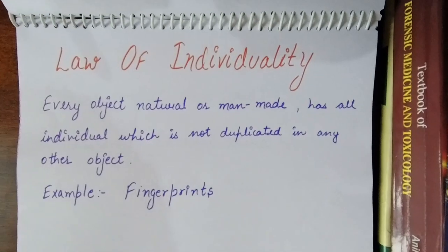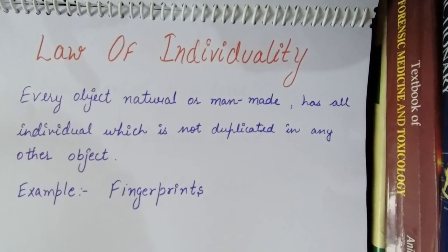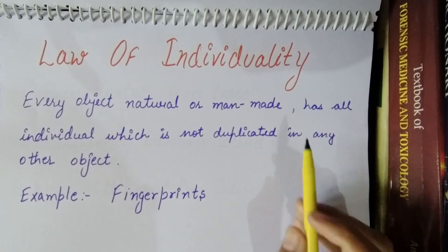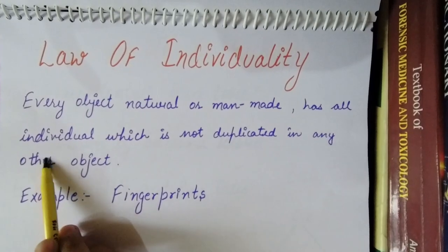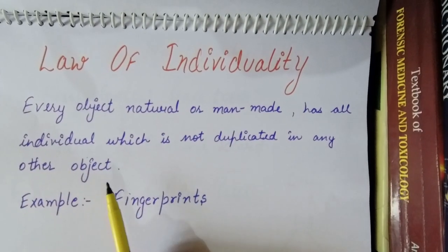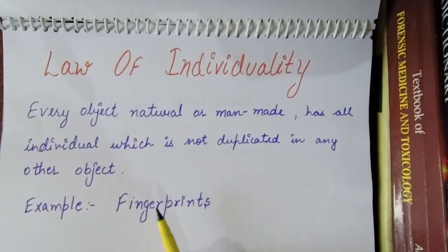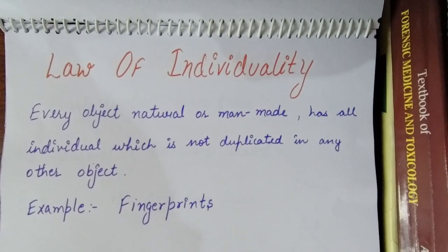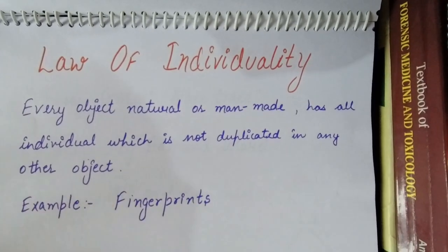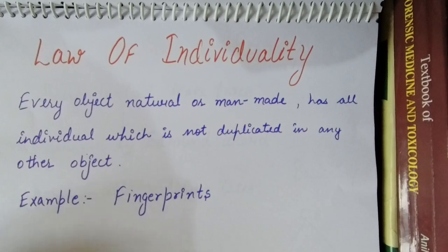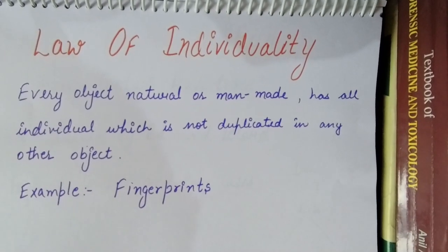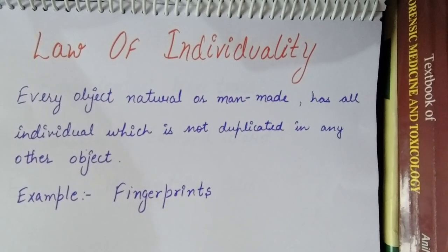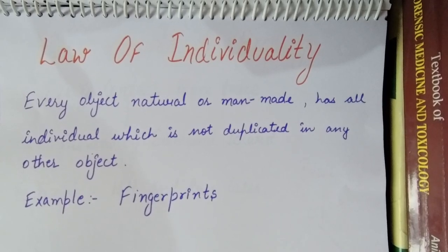Law of Individuality. Every object, whether it is natural or man-made, has individual uniqueness which is not duplicated in any other object. Although from a distance, objects of the same morphology may appear the same, but if we look closer in detail, there will always be a difference.